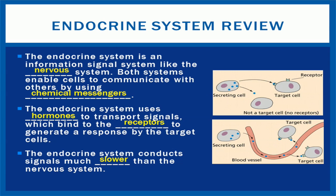The endocrine system is an information signal system quite like the nervous system. Both systems enable cells to communicate with others by using chemical messengers. The chemical messengers employed by the endocrine system are called hormones. Hormones are secreted into the bloodstream by the endocrine glands and transported to the target gland, where they bind through receptors on the cell to generate a response by the target cell. Compared to the nervous system, the endocrine system conducts signals at a much slower rate.